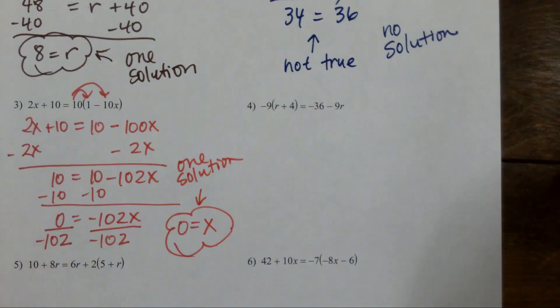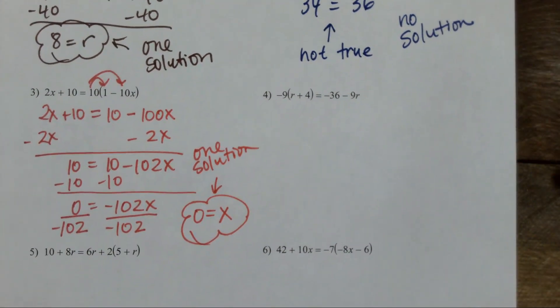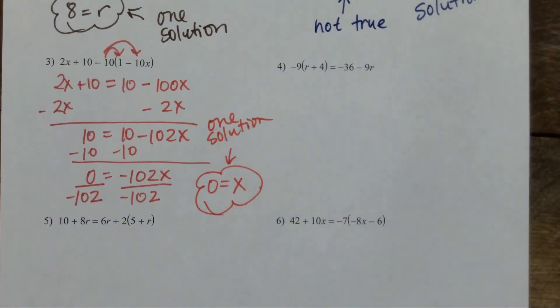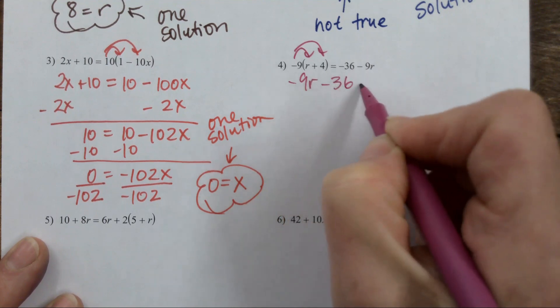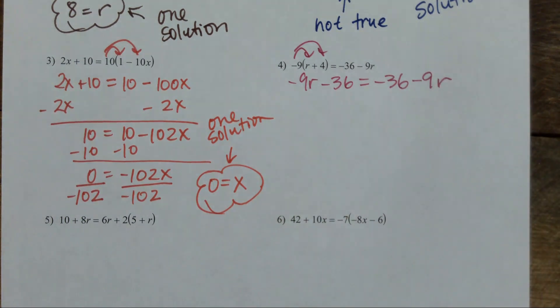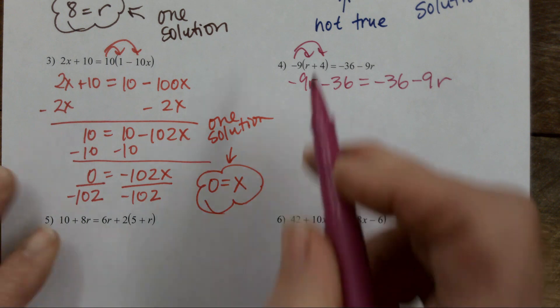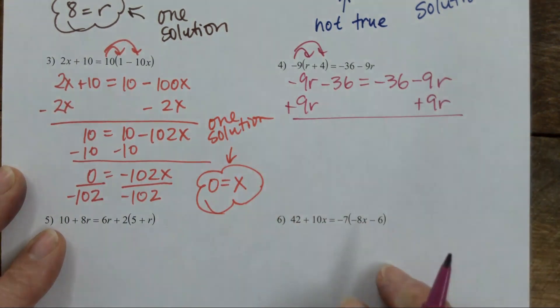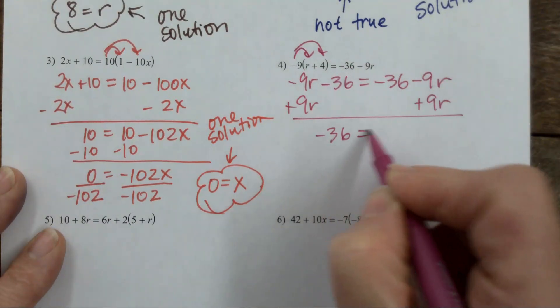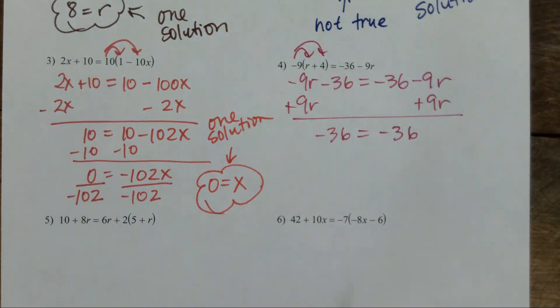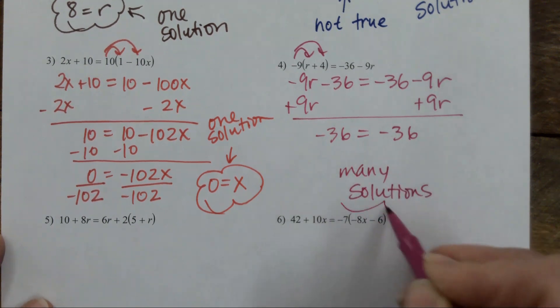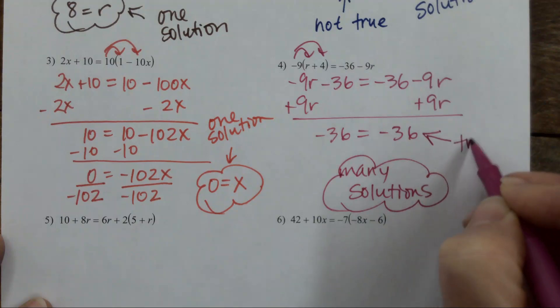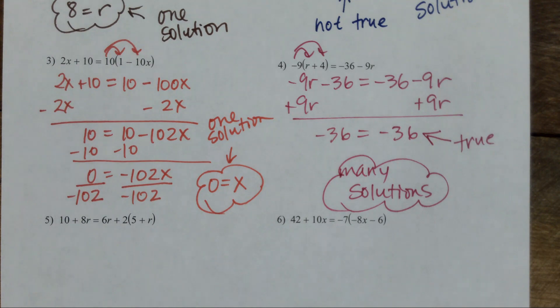All right, up next. What first? Distribute. Negative 9r minus 36 equals negative 36 minus 9r. What's next? Get rid of one variable. I'll add 9r. What happens? Negative 36 equals negative 36. This is a many. Remember, this is a true statement. Negative 36 will always equal negative 36, therefore we have many solutions.